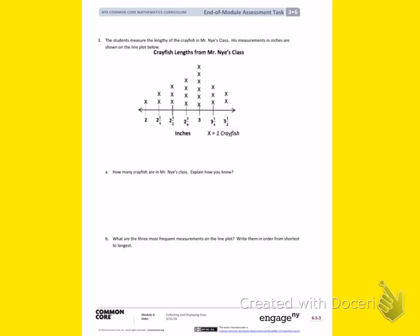How many crayfish are in Mr. Nye's class? Explain how you know. When I look at this line plot, I can see that there are many different amounts of X's. Each X equals one crayfish. If I count all the X's, I will know the total.